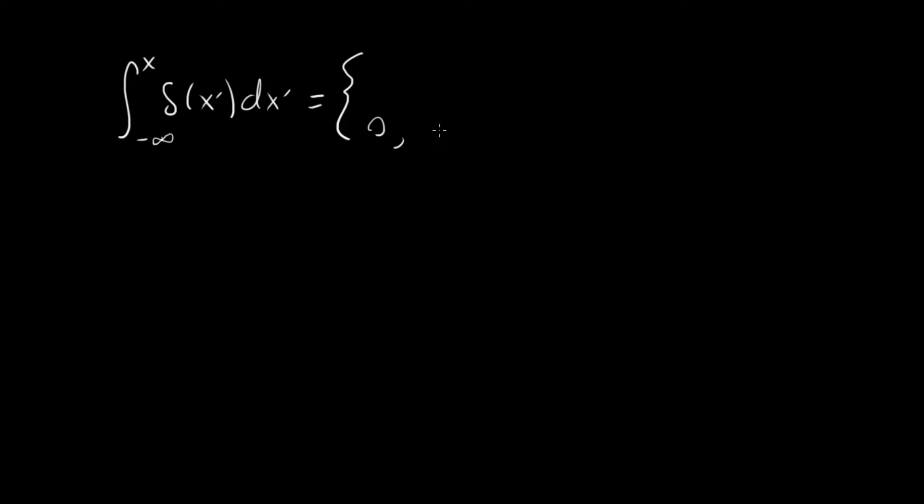So it's going to be 0 if x never gets to 0, if x is less than 0. And 1 if you actually do end up including the 0 here in your domain, so 1 if x is greater than 0.